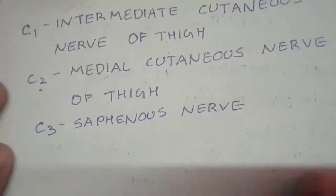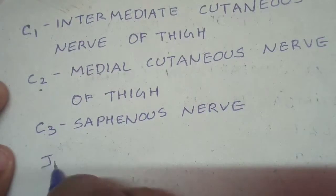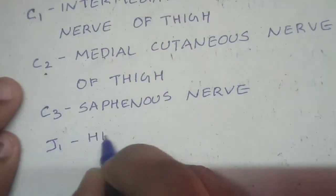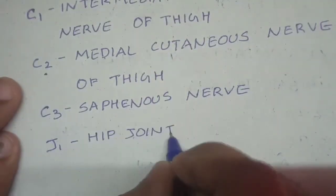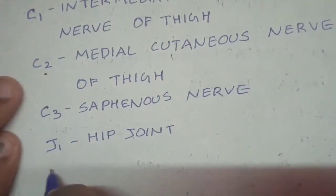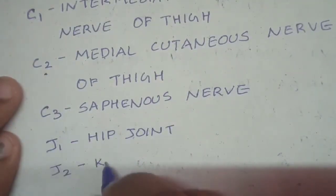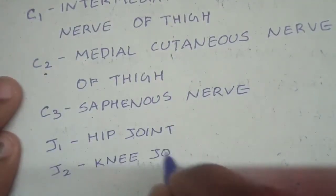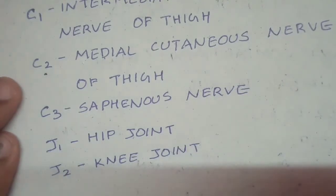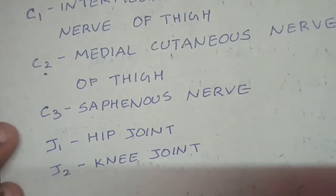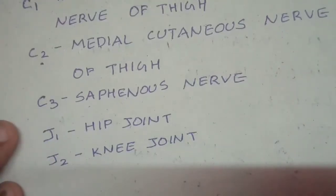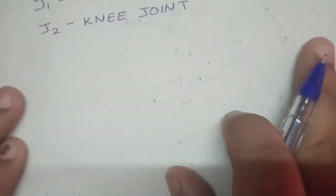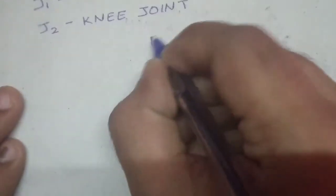For the joints, J1 is the hip joint and J2 is the knee joint. You can memorize these quite easily — I have no special mnemonic for this part.